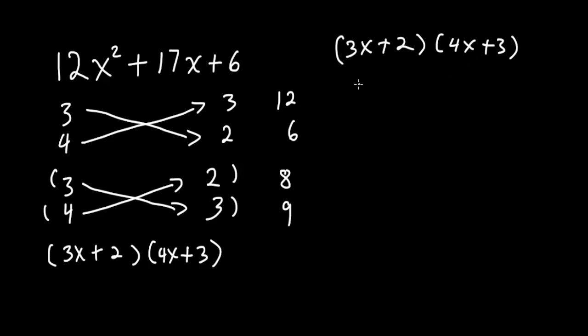So 3 times 4 is 12, giving us 12x squared. 3 times 3 is 9, so plus 9x. Plus 8x. The last one, plus 6.